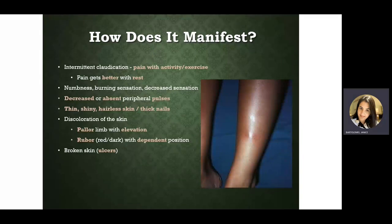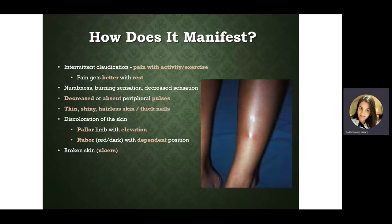So how do these clients present? For peripheral artery disease, people have pain whenever they are ambulating or doing some activity. The proper name for that is intermittent claudication. The pain gets better whenever they rest — they might be walking and start feeling pain, but once they sit down and rest their legs, the pain subsides.